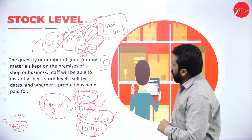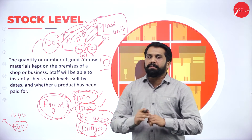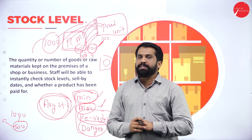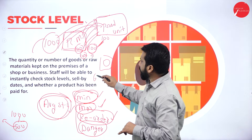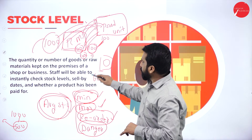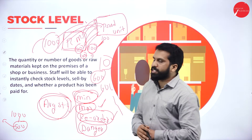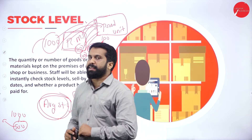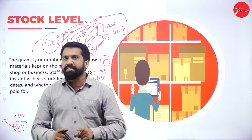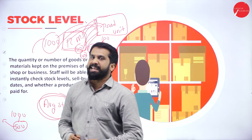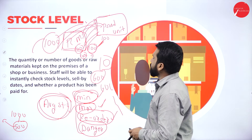Average stock level means they maintain a standard — for example, every time they keep 600 as stock. They maintain this average consistently. This is called average stock level. That is all about the explanation of stock level.